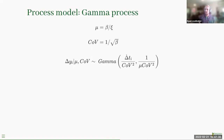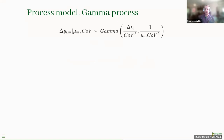This is just a single gamma process. Since we have 10 spline coefficients, we model each of them with a gamma process where each spline coefficient has its own average wear rate, and then we completely pool the coefficient of variation so it's shared amongst all the different spline coefficients.